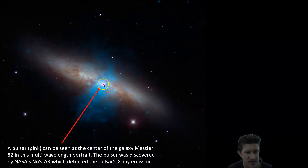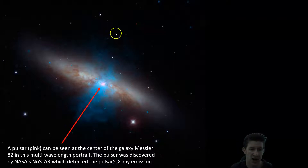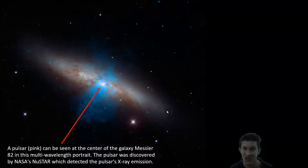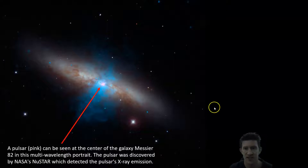This tiny little pink dot in this picture in the Messier galaxy is a pulsar in a multi-wavelength portrait — not what it looks like to the naked eye, since the flashing lights are radiation. This one was discovered by NASA's NuSTAR, which detected the pulsar's X-ray emission.